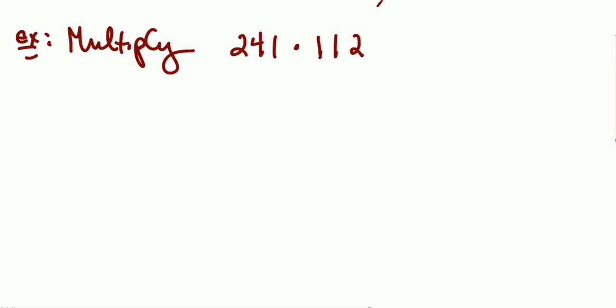Okay, 241 times 112. Again, it does not matter which one of these you make the multiplier. As long as you're lining stuff up. Let's go ahead and do this. We'll have 241 times 112.